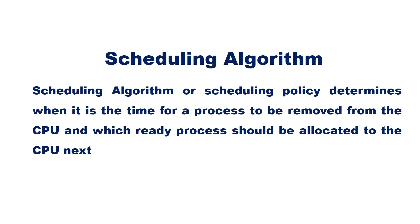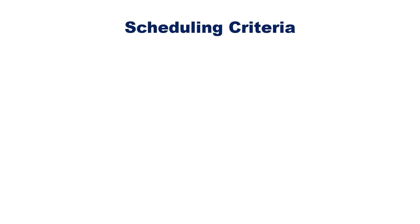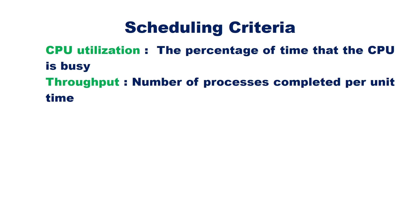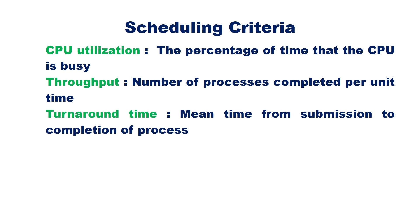There are several parameters for determining how good a scheduling algorithm is: CPU utilization — the percentage of time that the CPU is busy; throughput — the number of processes completed per unit time; and turnaround time — the mean time from the submission to the completion of the process.